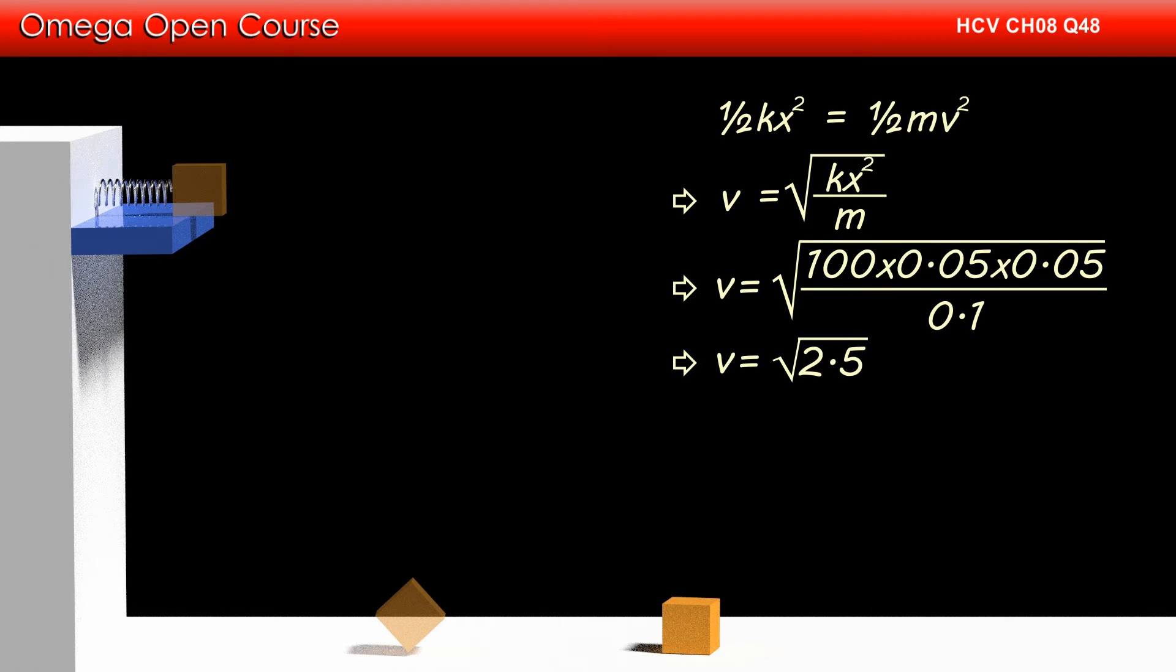The initial vertical velocity of the block is 0 and it falls downward by distance 2 meters under gravity. Therefore, if t be the time the block takes to strike the floor, then half gt square must be equal to 2 meters, which implies t is equal to root under 4 by g.